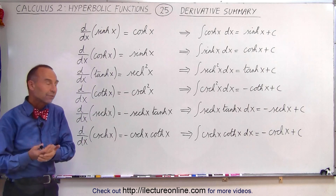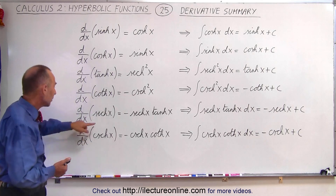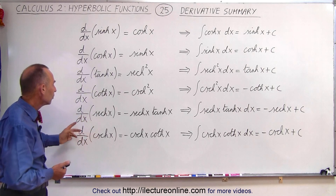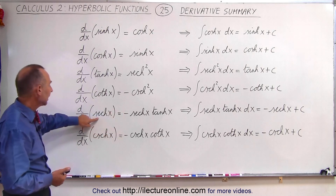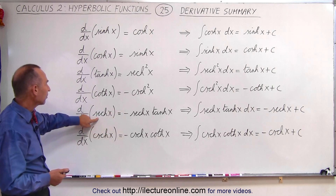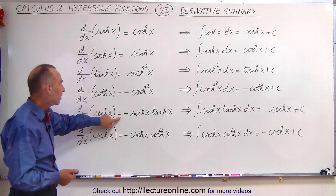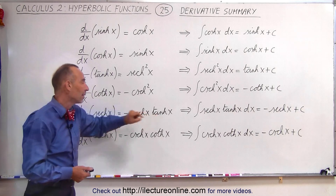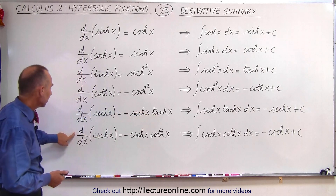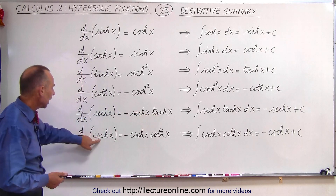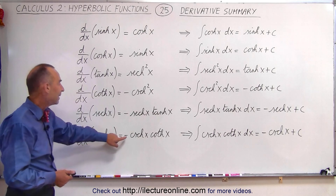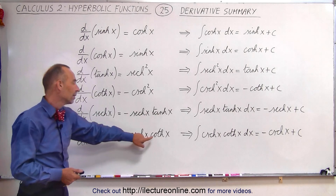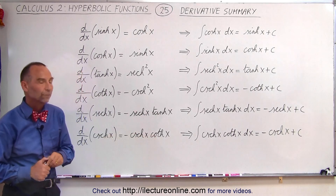When we take the derivatives of the hyperbolic secant and the hyperbolic cosecant, notice both answers are negative. In the case of the hyperbolic secant, it's equal to the negative hyperbolic secant times the hyperbolic tangent, and in the case of taking the derivative of the hyperbolic cosecant, we get the negative of the hyperbolic cosecant times the hyperbolic cotangent.